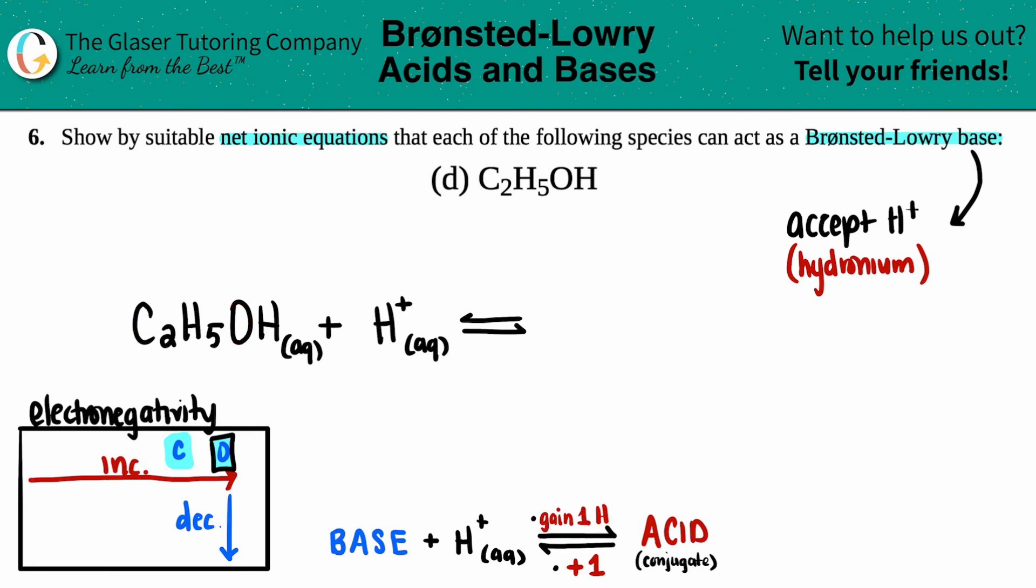So we're going to say C2H5OH2 - so that's how we gain one hydrogen. Now I just have to add one to my overall charge.